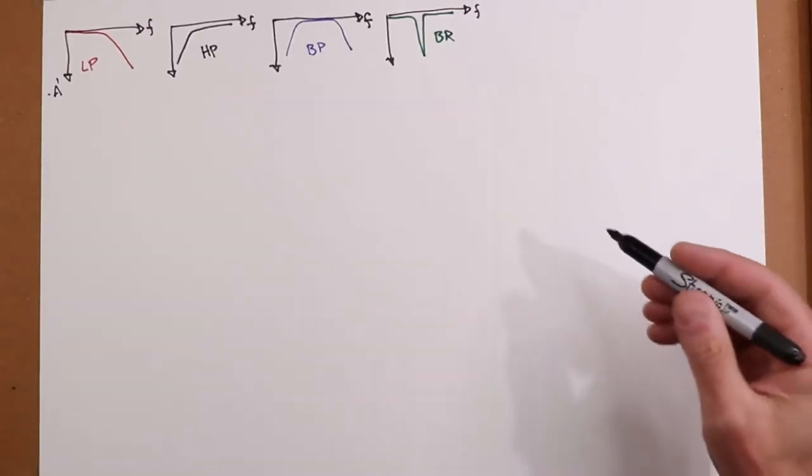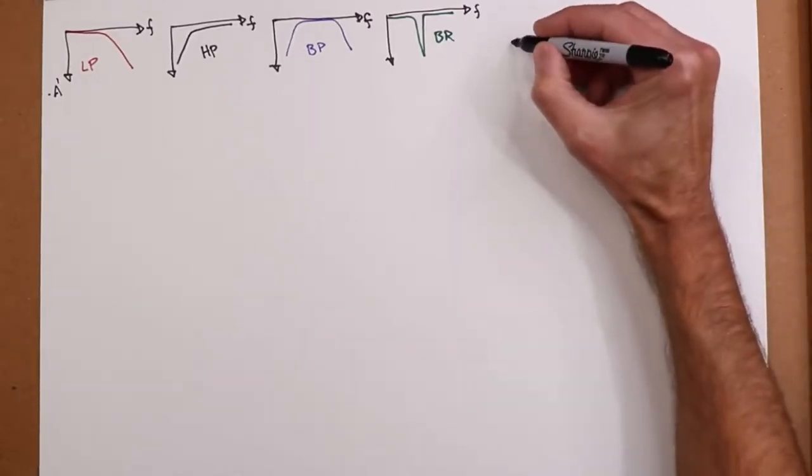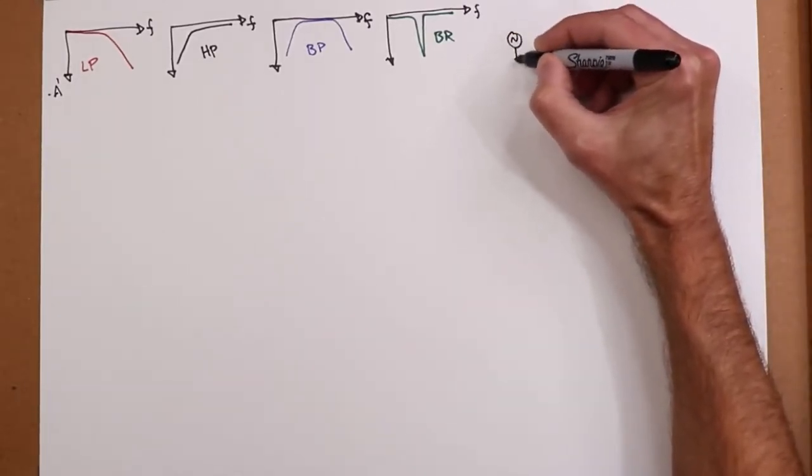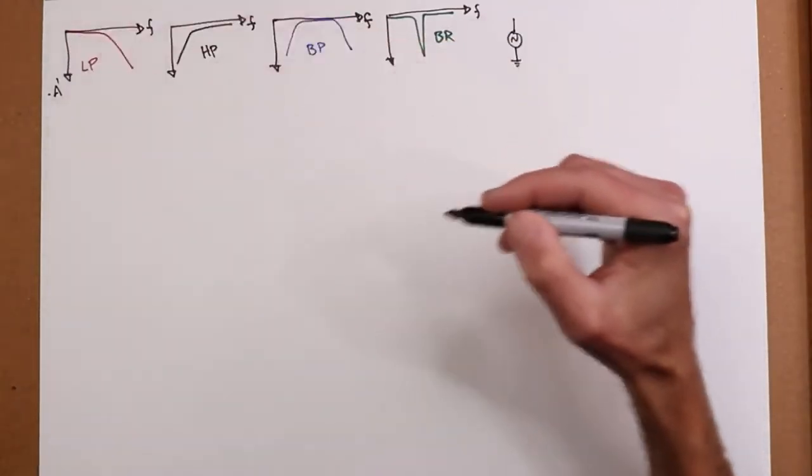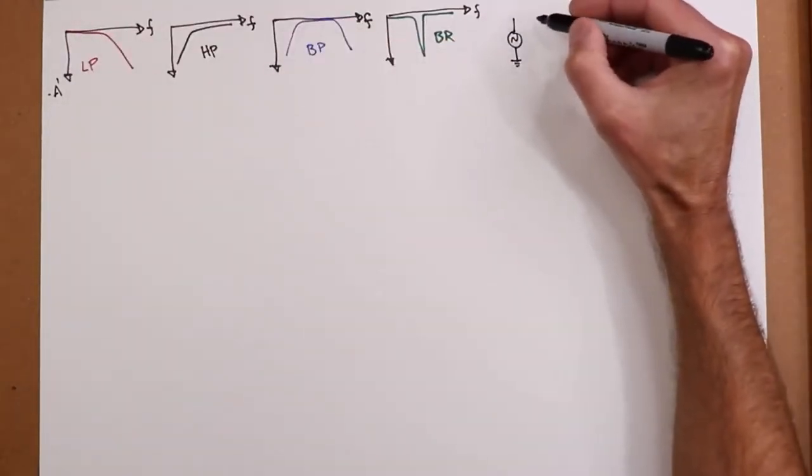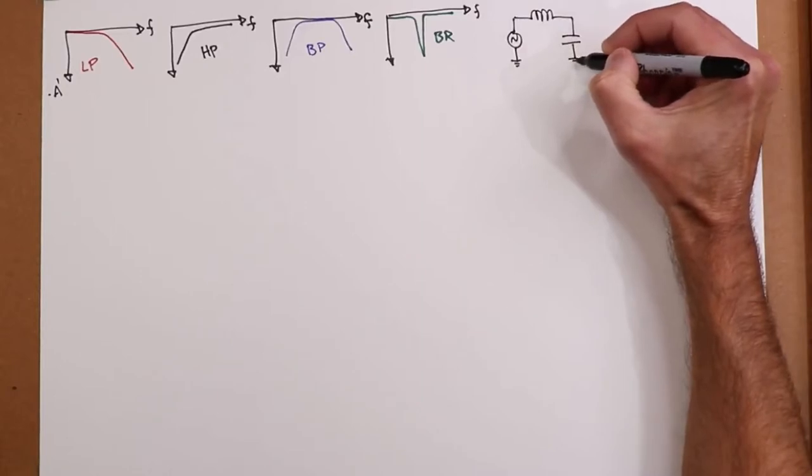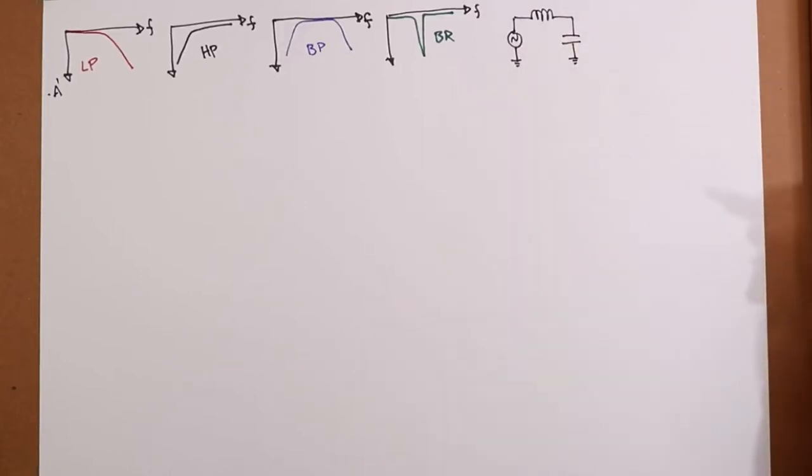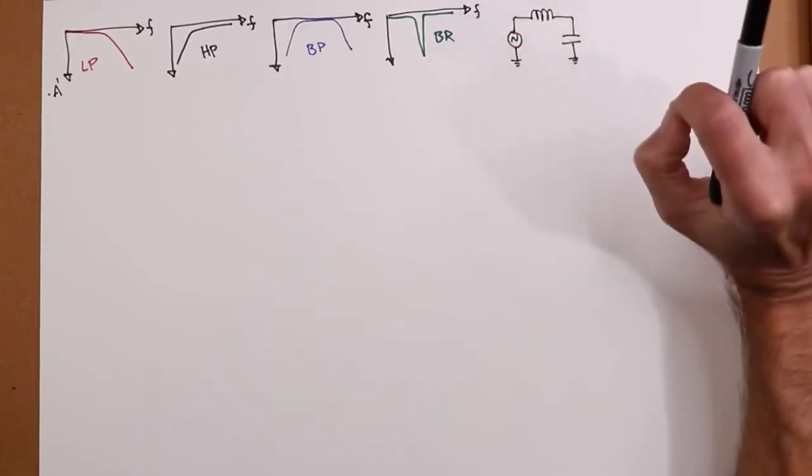So how do we make these things? Well, we can, with passive components, do something like this. There's our signal source. Maybe I want to make a low-pass filter. Use an inductor and a capacitor. So here's what's going to happen. Really low frequencies, X sub c is huge, X sub l is small. As a voltage divider, virtually all of the input gets to the output.